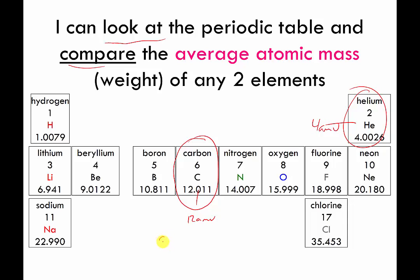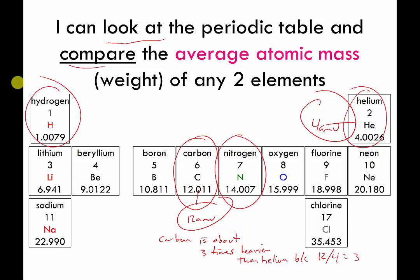So I would say that carbon is about three times heavier than helium. Because well 12 divided by 4 is 3. So carbons weigh about 12 AMU. Heliums weigh about 4. So your average carbon is about three times heavier. You should be able to do that for any of the comparing any two elements in the periodic table. Nitrogen is about 14 times heavier than hydrogen.